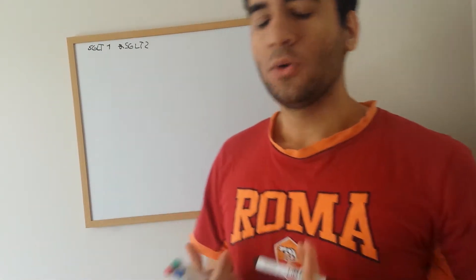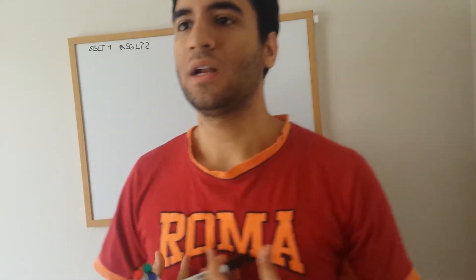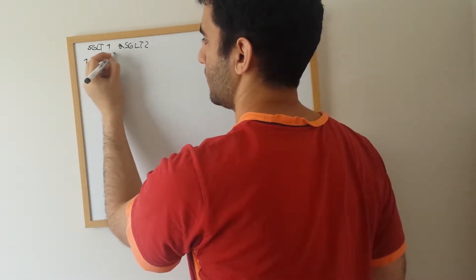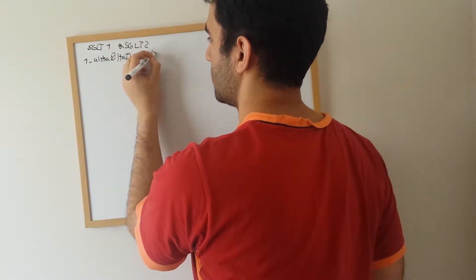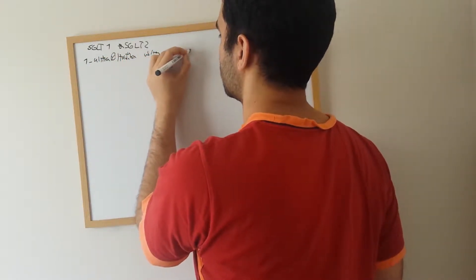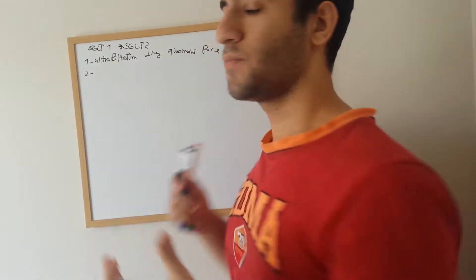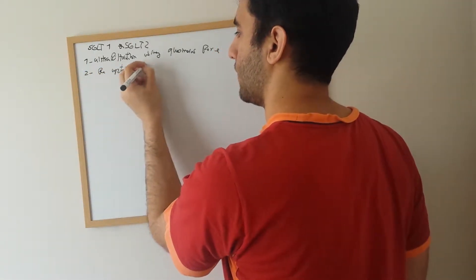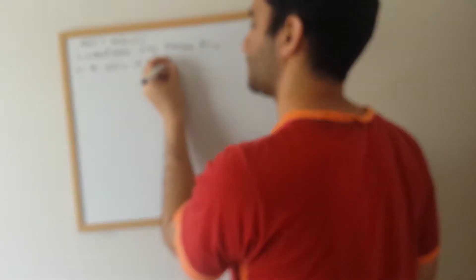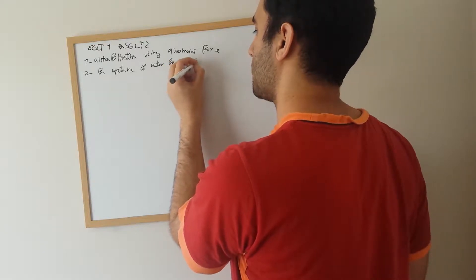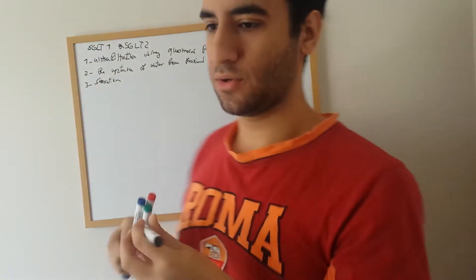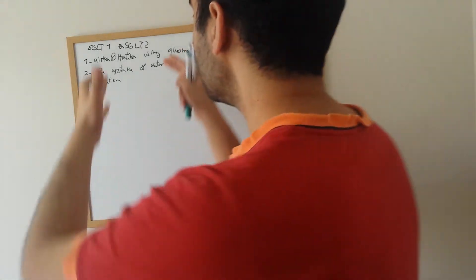When you digest a lot of glucose, the kidney acts as a filtrate of the body and it initially involves three steps: ultra filtration using the glomerulus, re-uptake of water from the proximal tubule, and lastly secretion of waste into the renal tubule.